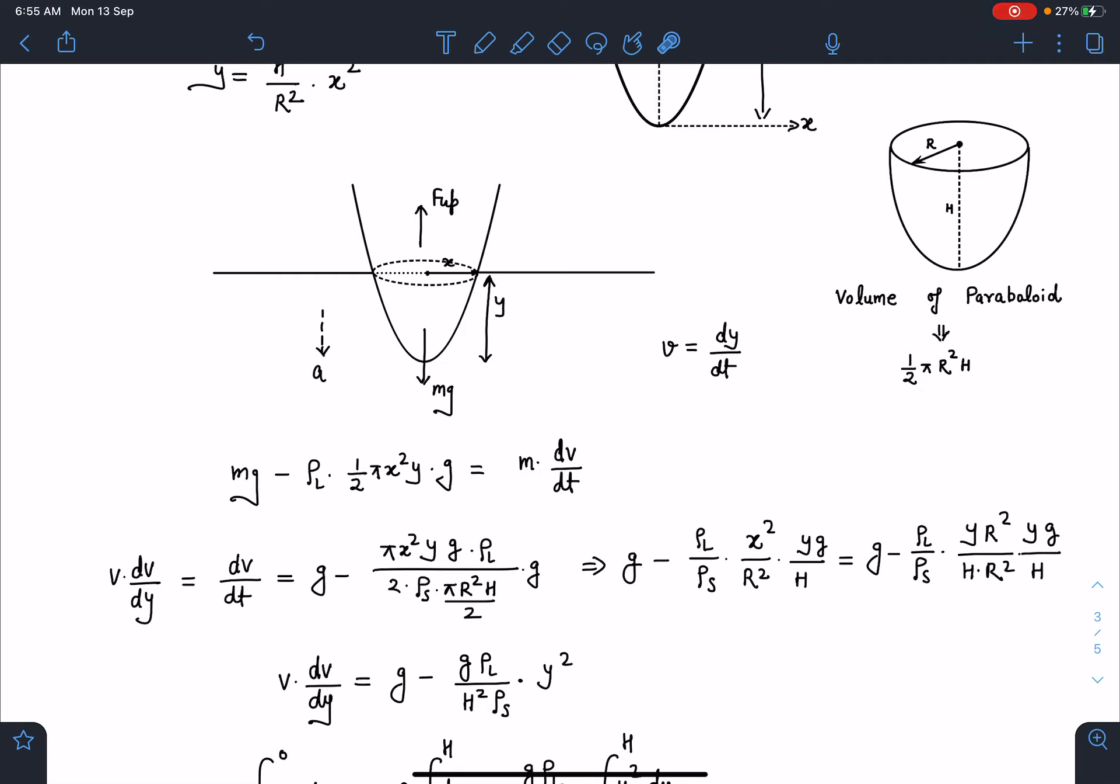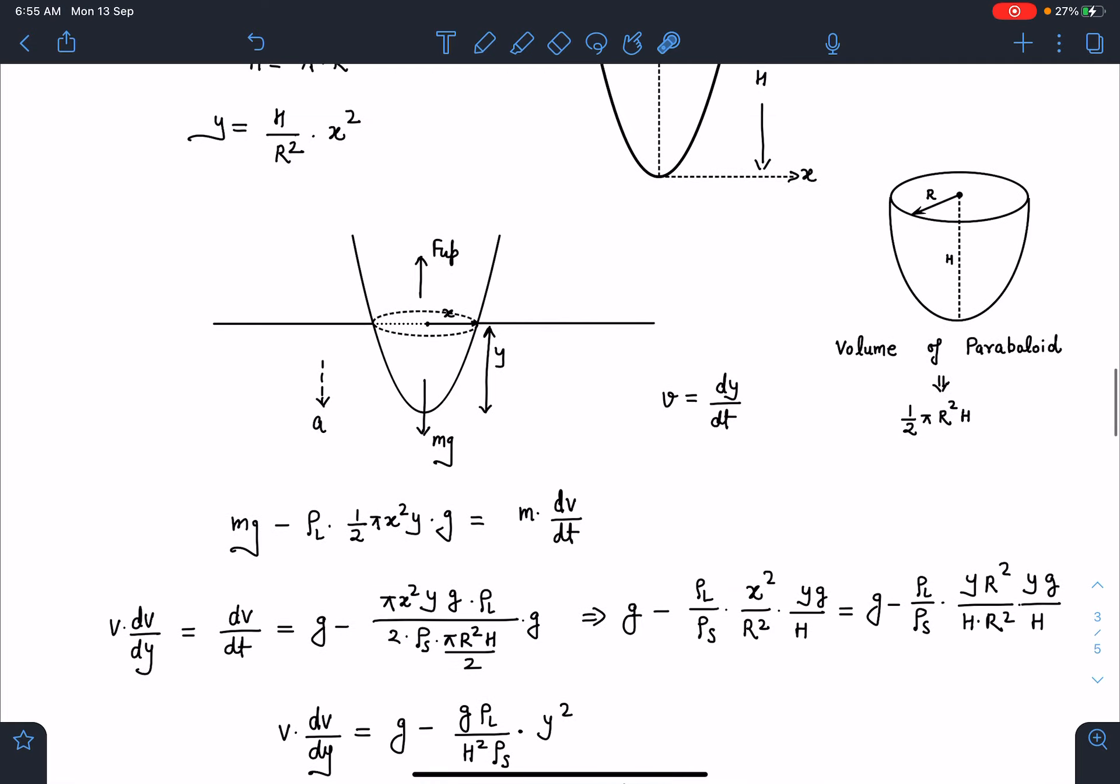So that will become g minus this buoyancy into g divided by and this will be the mass m which is rho solid pi r square h by 2 into g. So you can see here on simplifying I am getting g minus rho l by rho s x square by r square g y by h. Alright now I can just eliminate this part. I can convert entire equation in y so I am substituting the value of this x square in terms of y by using this equation of paraboloid here.